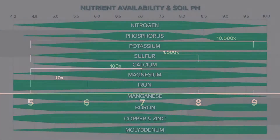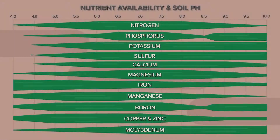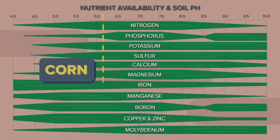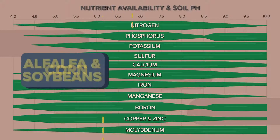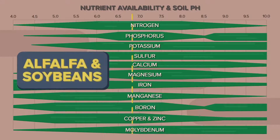Certain crops like a little lower pH — corn would respond to a 6.2 or 6.3 pH, whereas alfalfa or soybeans might like a pH closer to that 6.8 range.